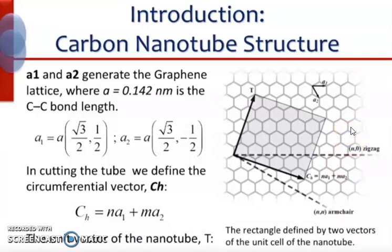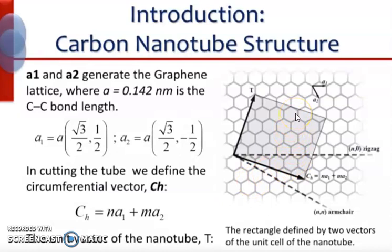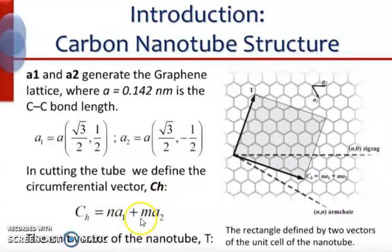Single-walled carbon nanotubes are expressed in terms of a one-dimensional unit cell. A1 and A2, as seen on the screen, are unit vectors defined by the dimensions and directionality of the unit cell. The characteristic length denoted by the letter A stands for the carbon-carbon bond length. The circumferential vector CH is defined by a linear combination of the unit vectors A1 and A2, where N and M are integers. The unit vector of the nanotube is defined in a similar way.